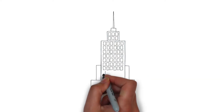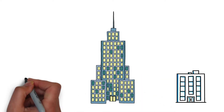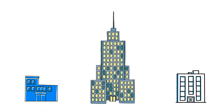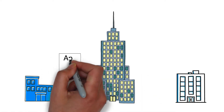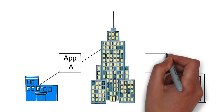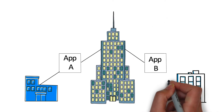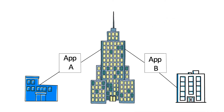In traditional networks, you have a handful of apps and services that are statically deployed and fixed by location. They don't change very much. You set them up, you test connectivity, and you walk away.